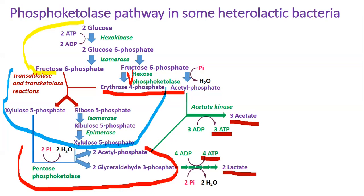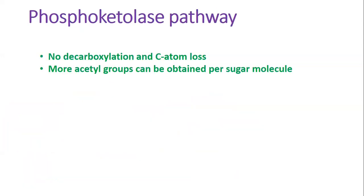Here comes the advantage of this sugar metabolism pathway. Acetyl-CoA is produced without decarboxylation reactions, which are accompanied by the loss of one carbon atom in the form of carbon dioxide. For example, when pyruvate — the end product of the Embden–Meyerhof–Parnas pathway — is decarboxylated by the pyruvate dehydrogenase complex, one carbon atom is lost.